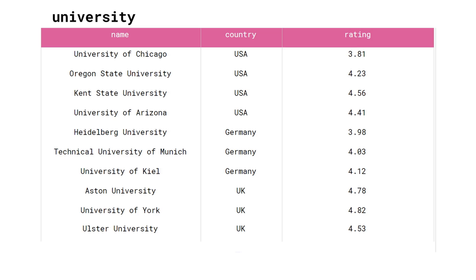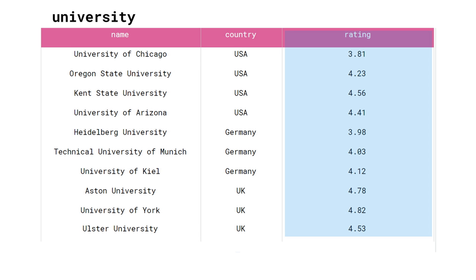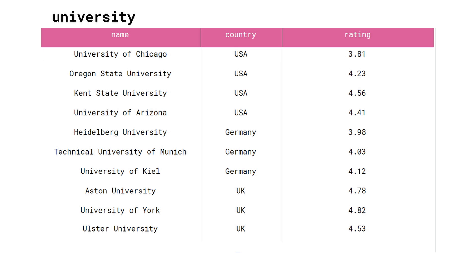In this video we are going to use a simple table named University. You can see it on the screen now. It contains three columns: name, country, and rating. For example, the University of Chicago from the US has a rating of 3.81. Don't pay too much attention to the rating values, however — they are fictional.